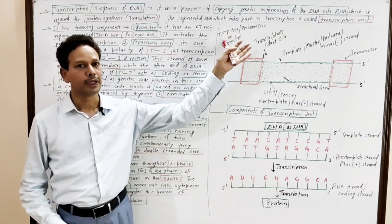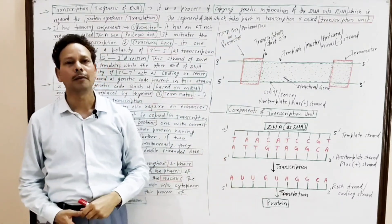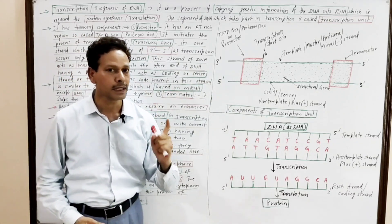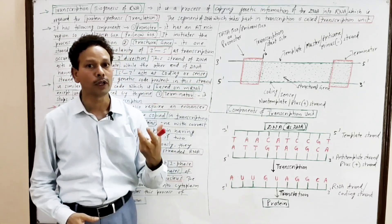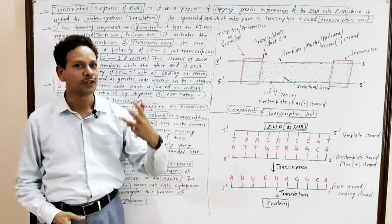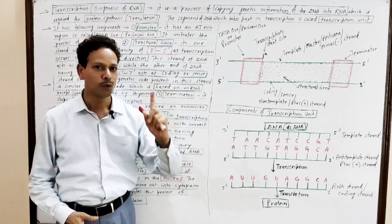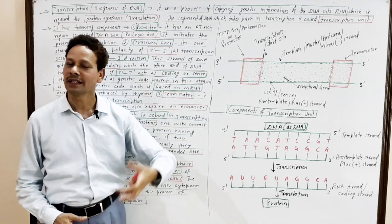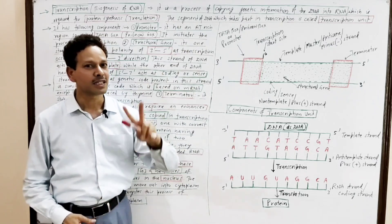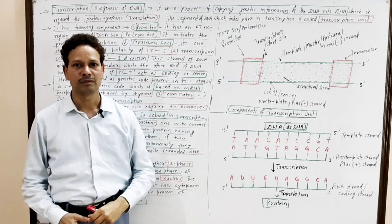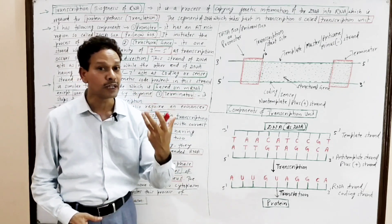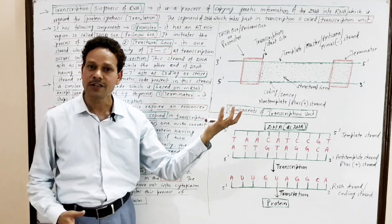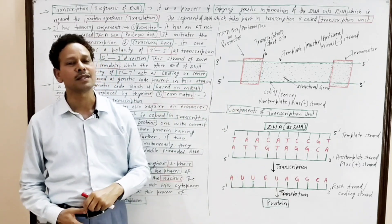Please note down — these notes are available in the description of the video. Download your notes for this chapter of Molecular Biology of Genetics. Three important topics: one is DNA replication, that is synthesis of DNA; second is transcription, that is biogenesis of RNA; and third is translation, means synthesis of proteins.